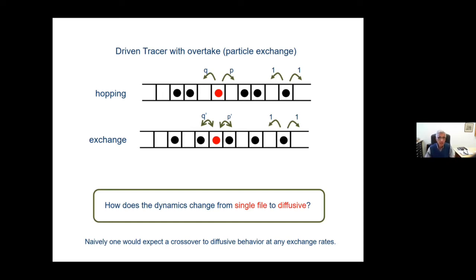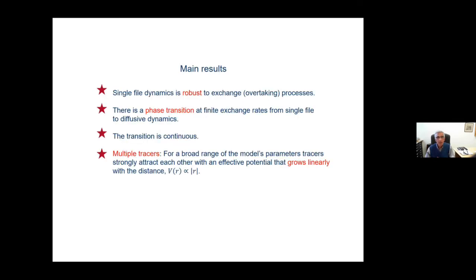Okay, so that's the question. And what we found is rather surprisingly that this is not the case. I'll just summarize the main results: when you add the probability of exchange with the nearest neighbors, the single file dynamics is robust, that is, it still stays like a kind of single file, even though there is exchange rates, particles can overtake. Then, as you increase this exchange rate, you encounter a phase transition, and only then it becomes diffusive. So there is a full phase of single file behavior. This transition is continuous.